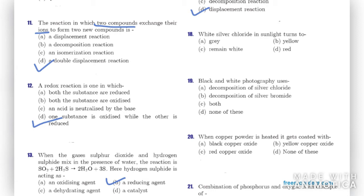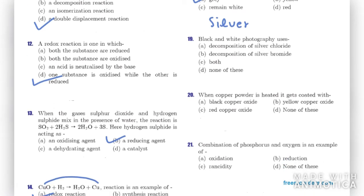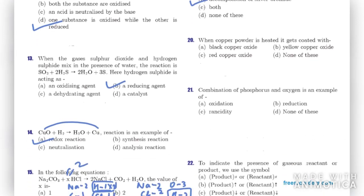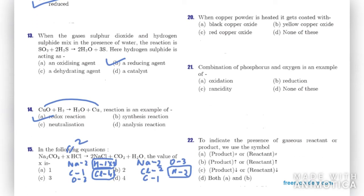Question eighteen: white silver chloride in sunlight turns — grey, yellow, remains white, or red? It actually turns grey, which is silver that we obtain. Question nineteen: black and white photography uses the decomposition of silver chloride or silver bromide? It is the decomposition of silver bromide that is used in photography.